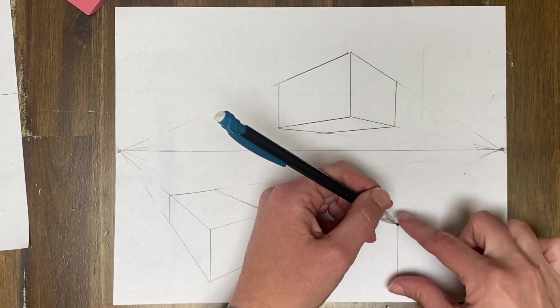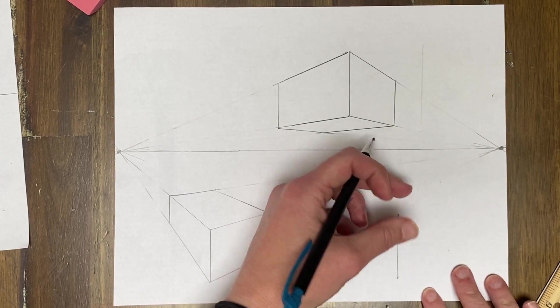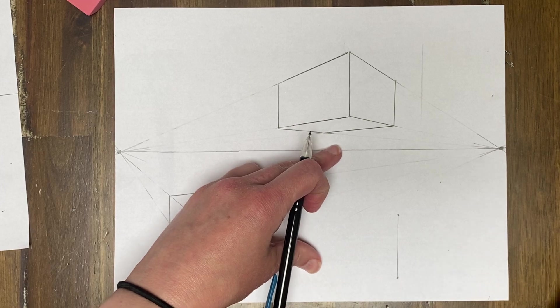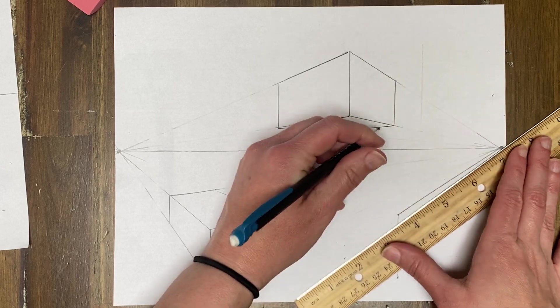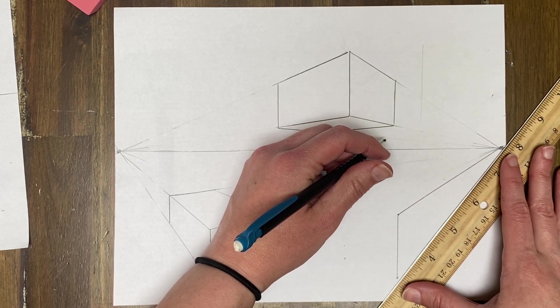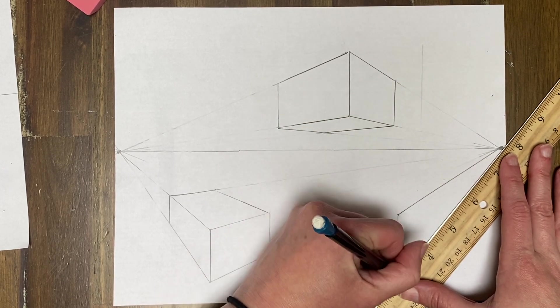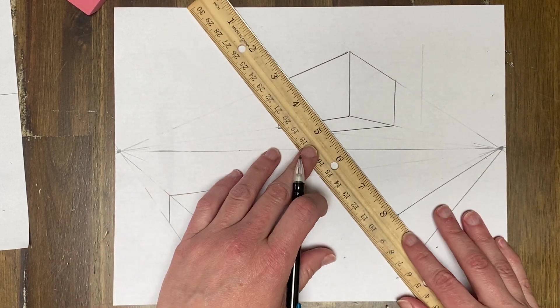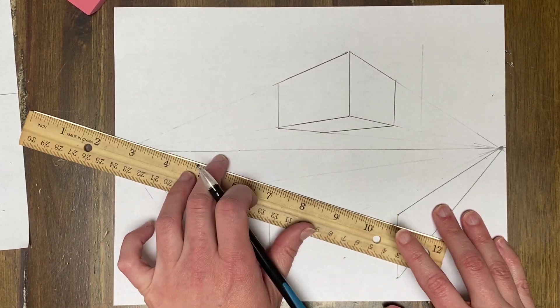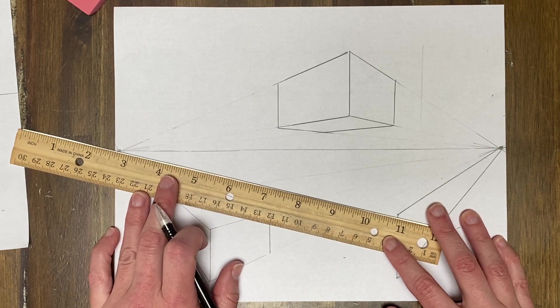Top, bottom, right side goes to the right vanishing point, left side goes to the left vanishing point. I'm drawing dark, you all should be drawing lightly because there's a lot of erasing involved. Make sure you're not just drawing a random line to the horizon line, it needs to be going to the vanishing point.